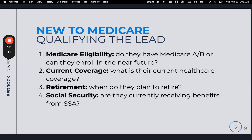New to Medicare — Qualifying the Lead. To ensure your leads can actually purchase a plan, check: First, are they Medicare eligible? Do they have a Medicare A or B card or ID number, or can they enroll in the near future? Second, current coverage — what is their current health care coverage? Depending on their coverage, they may or may not be able to continue with it instead of taking Medicare. Some retirement or government retirement plans can also impact Medicare. Third, retirement — when do they plan to retire? Some people may defer Medicare while staying on creditable coverage. If a client plans to continue working on their employer-sponsored or spouse's employer-sponsored health plan, they may not need Medicare right now.